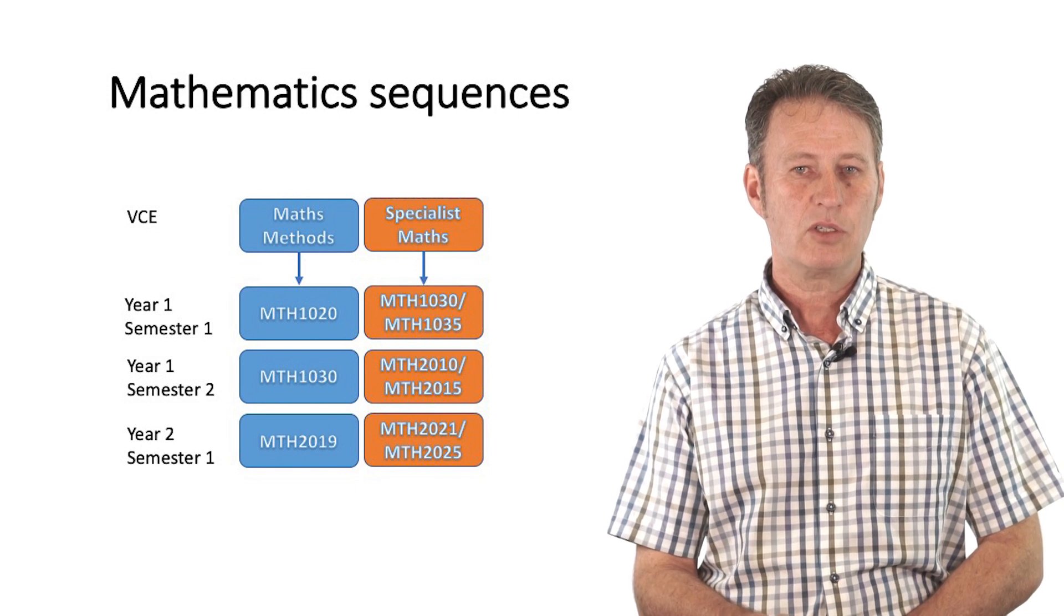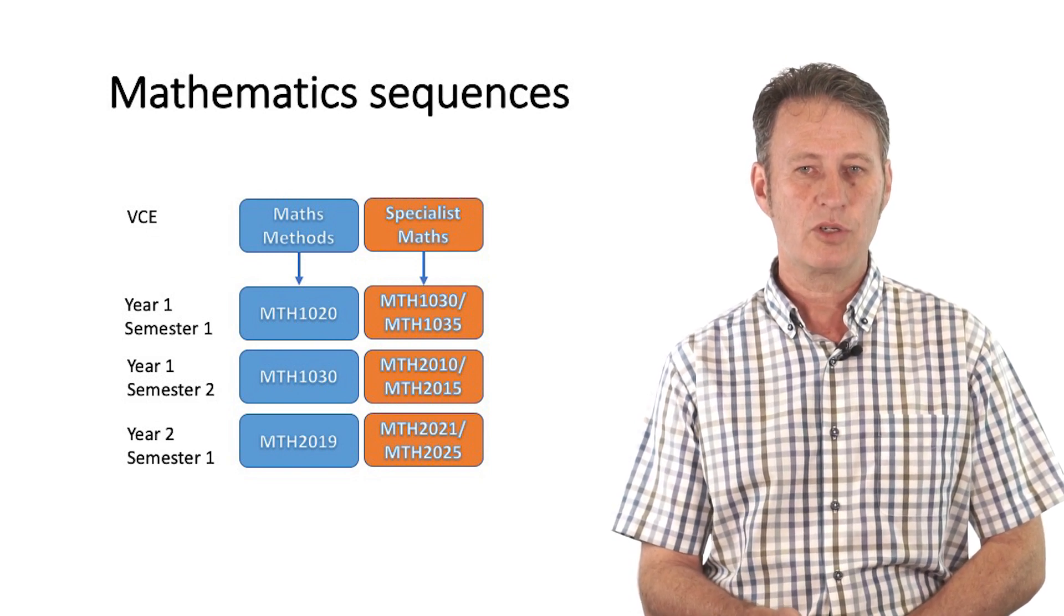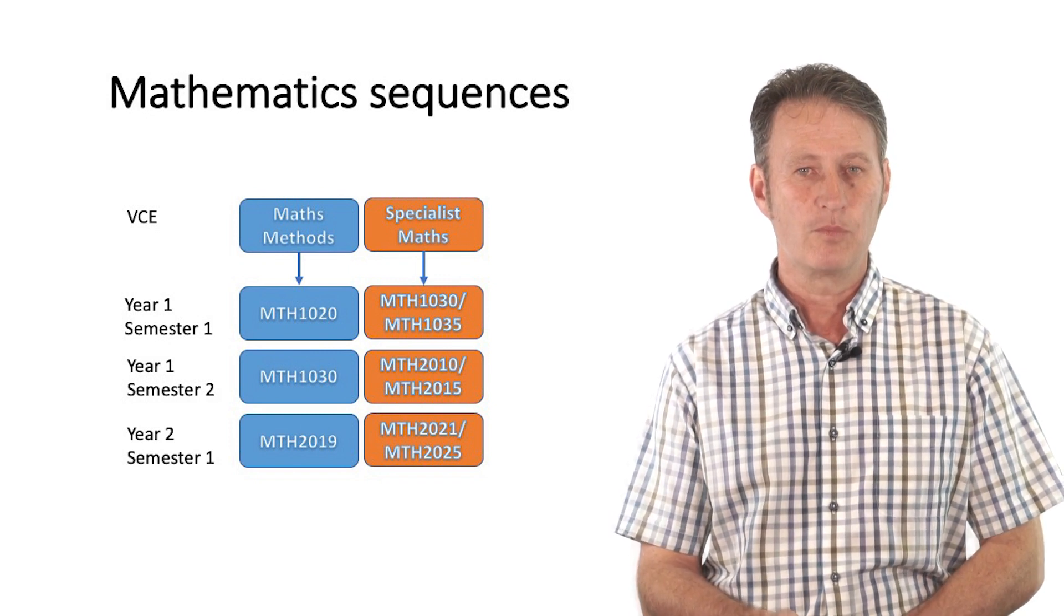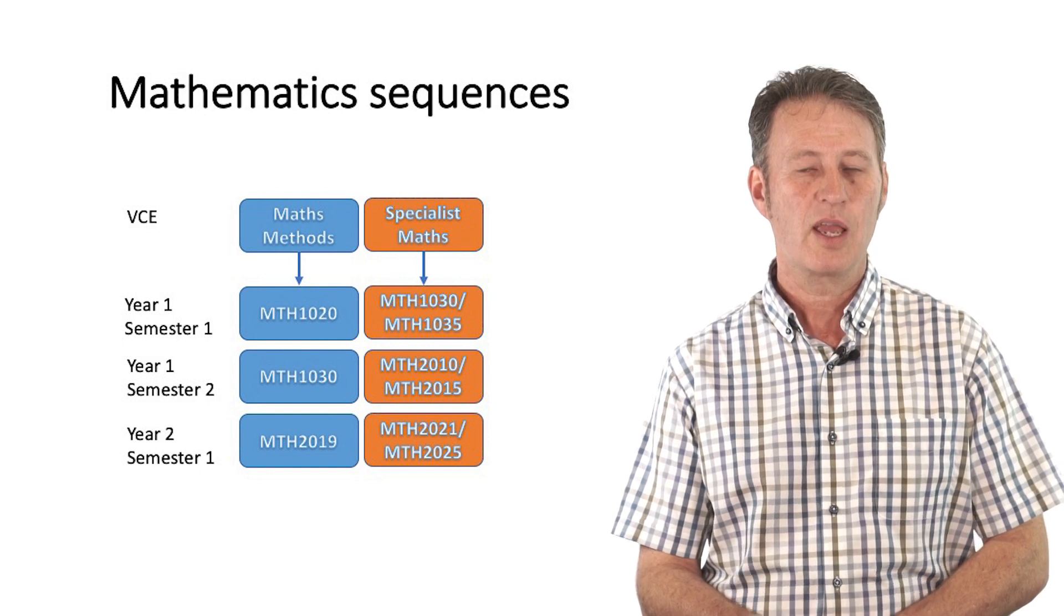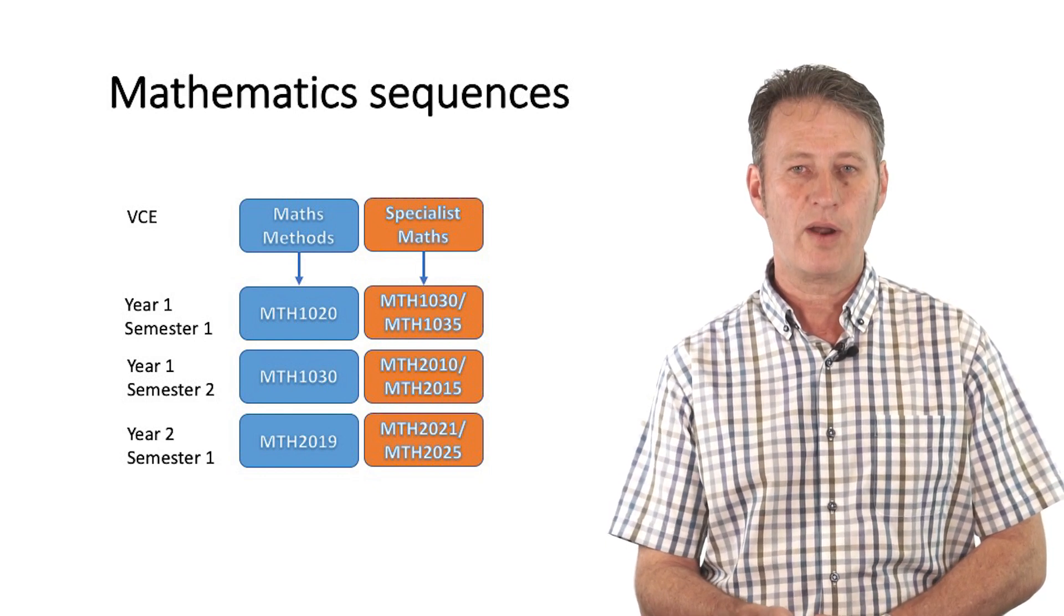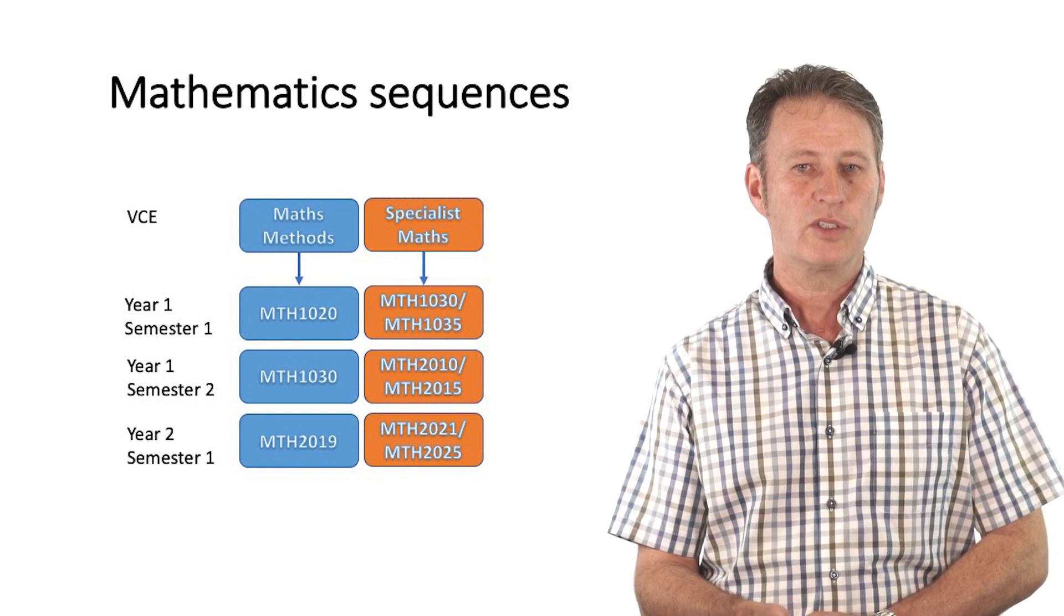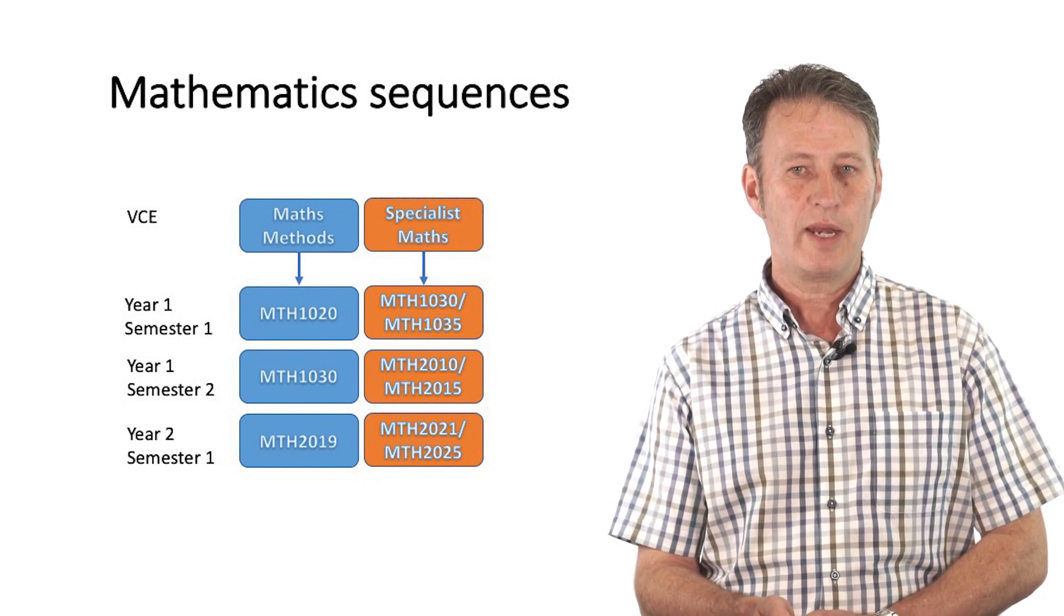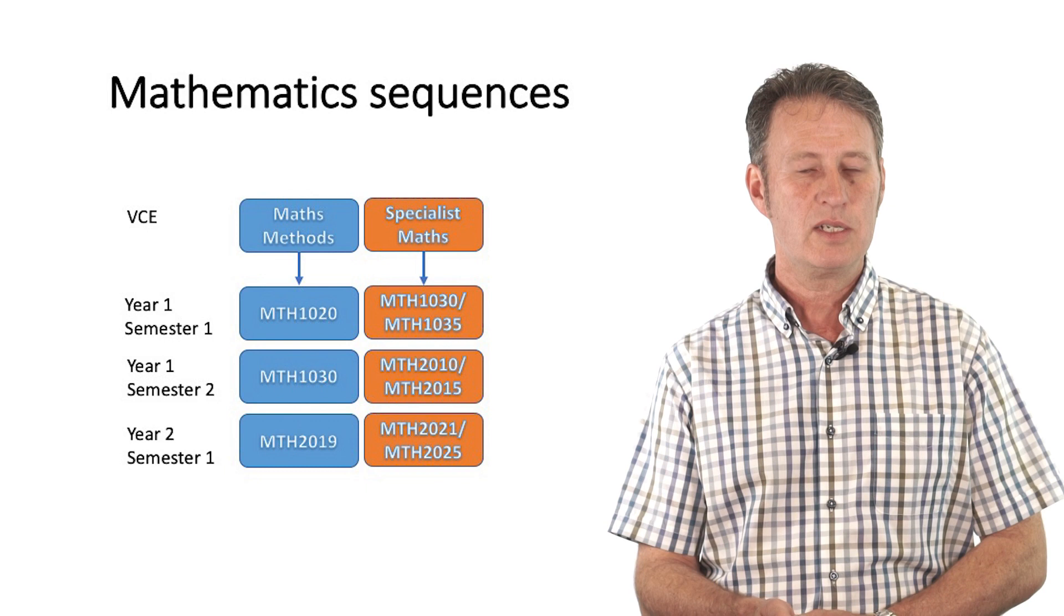The mathematics sequence that you take depends on the highest mathematics subject that you completed in school. If the highest mathematics subject you completed was VCE Maths Methods 3-4, or equivalent, then you take the sequence highlighted in blue. In your first semester, you take MTH 1020, which is essentially specialist maths without the statistics, and then you go on to MTH 1030, which is the first university level mathematics unit and covers calculus and linear algebra. In your first semester of second year, you will then take MTH 2019, which is an Advanced Calculus and Linear Algebra unit. If you've been admitted into the course from Gaokao, you must complete MTH 1010, functions and their applications prior to MTH 1020. MTH 1010 will count as an elective.